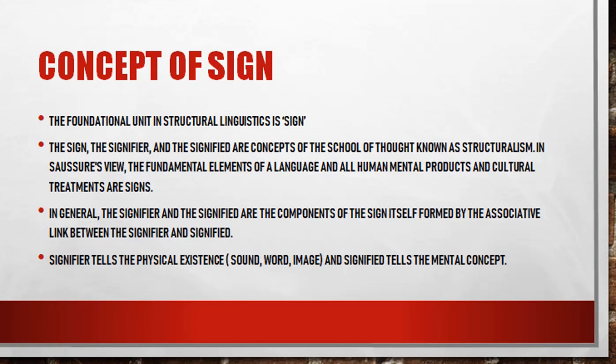Ferdinand de Saussure introduced the concept of the 'sign.' He said that the most functional and foundational unit of any language's structure is the sign. He further developed the concepts of sign, signifier, and signified. He said that all elements of language — mental processes, cultural elements, traditional elements — are all signs and symbolism that are part of linguistics.